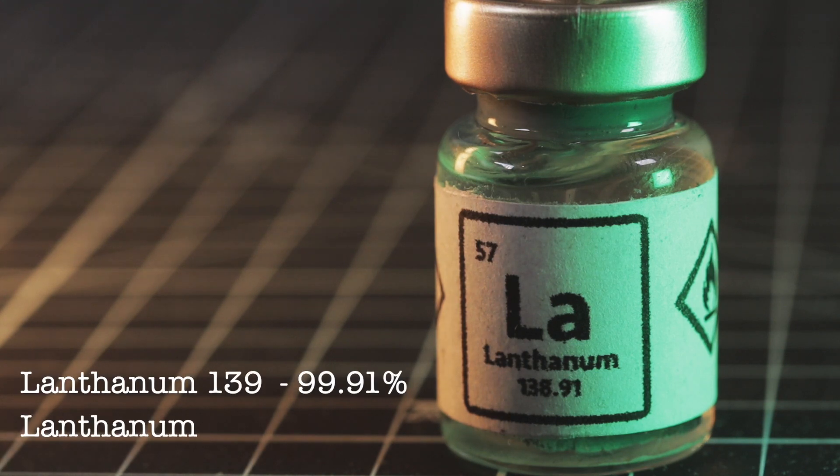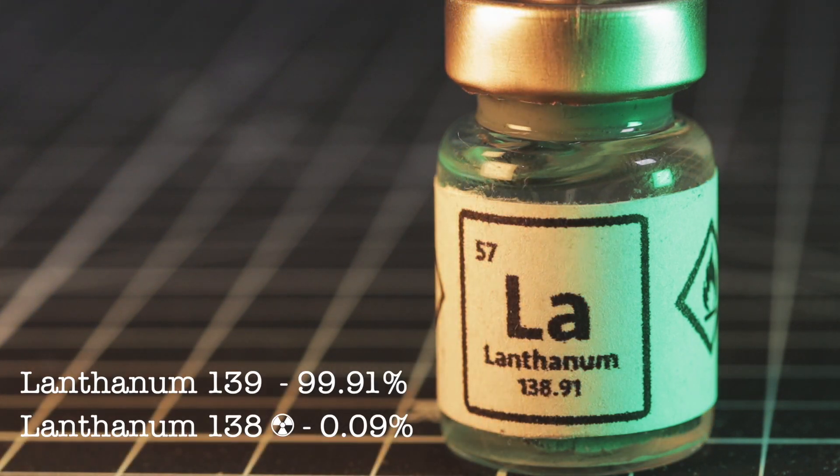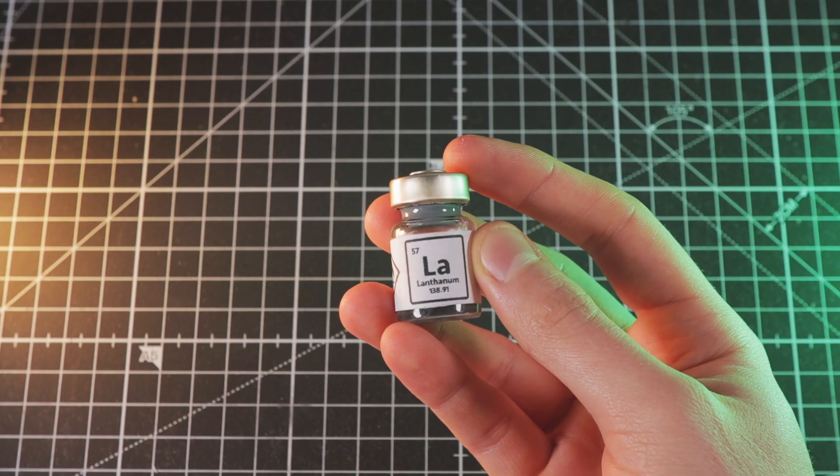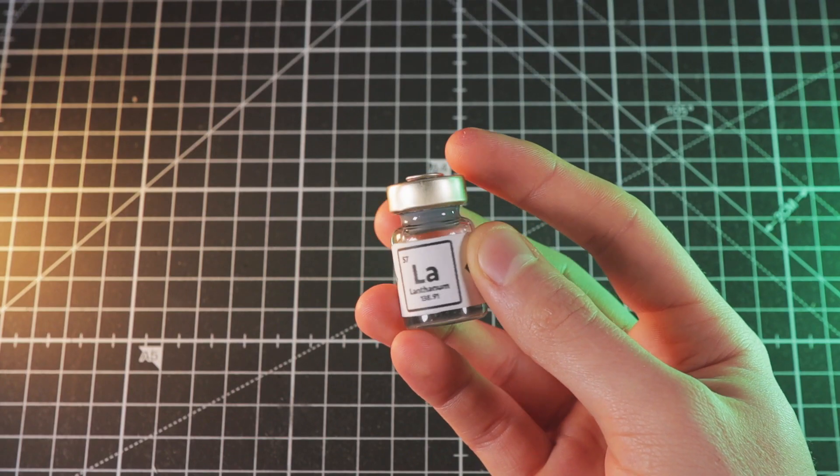In nature, there are two isotopes of lanthanum: lanthanum-139 and lanthanum-138, which has an abundance of 0.09% and is also radioactive.